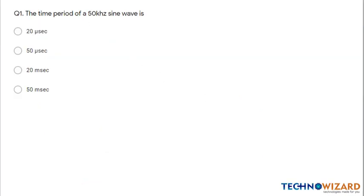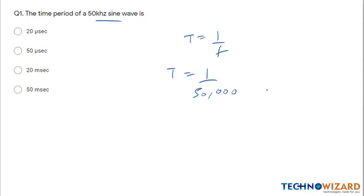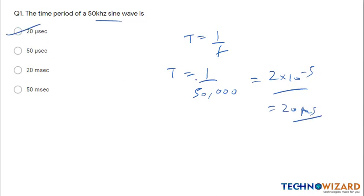Question 1: The time period of a 50 kHz sine wave is? We know that time period T = 1/frequency, therefore T = 1/(50 × 1000) = 1/50000 = 2 × 10⁻⁵ seconds, which is also written as 20 microseconds. Therefore option A is the correct answer.